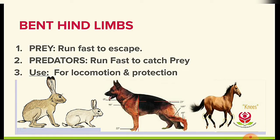Next is bent hind limbs. For prey animals, the hind limbs are bent so they can run fast to escape — examples include dogs and rabbits. For predators, the legs are also bent so they can run fast to catch prey — examples include tigers, lions, and cheetahs. Bent hind limbs are used for both locomotion and protection.